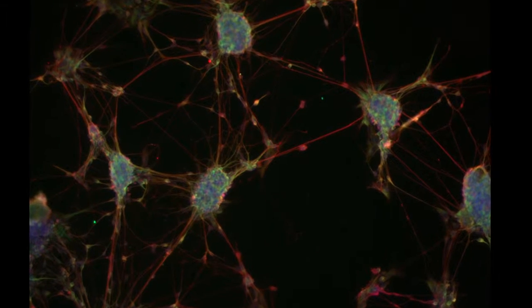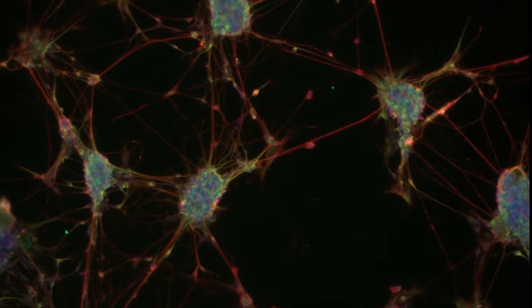In our SMA research we turn these stem cells into motor neurons and we want to find out two different things. One is why this gene defect in these nerve cells causes the nerve cells to die.